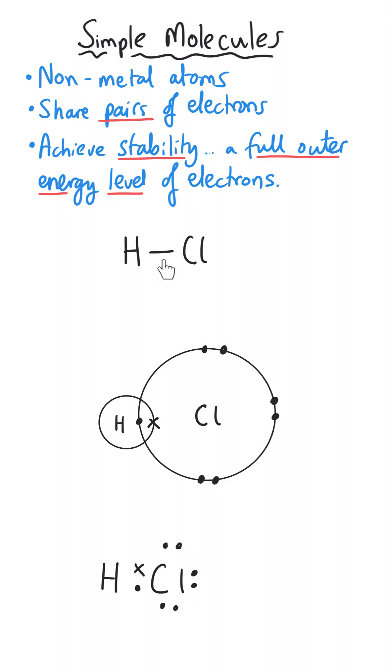The first is where we simply show a stick, and this represents the shared pair of electrons between the two atoms. Or we can show the actual energy level itself with this simple circle model, and a bigger circle is usually reserved for a bigger element. And you've got the two electrons involved in the bonding shown clearly, and then the three lone pairs around the other atom shown here. And then the third way is very much like the second way, except we don't show the actual energy levels, just the electron pairs themselves.